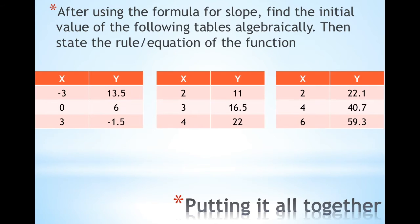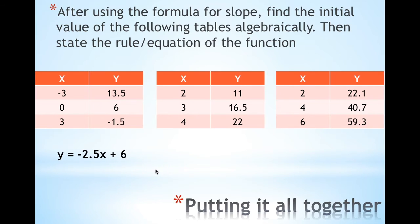Using the formula for slope, you find your slope, then algebraically find B. For the first table you would get your slope is negative 2.5. And if you were to plug in any x, y point into just this first part, you would find that B is equal to a positive 6.